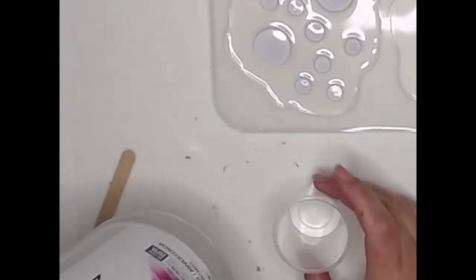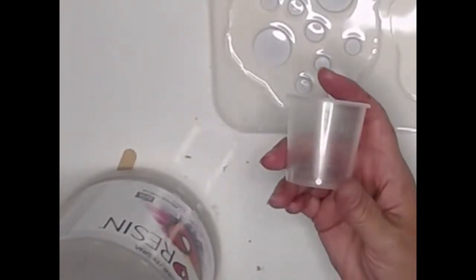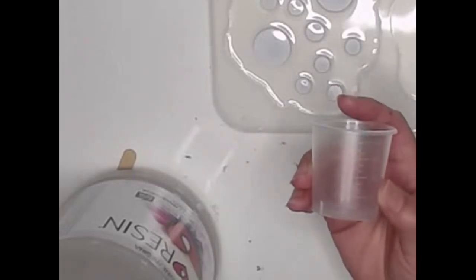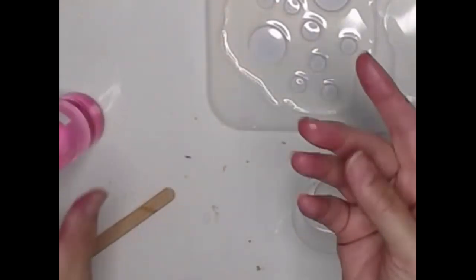All right, now Alumilite and Art Resin both have a 50-50 mixing ratio. You always want to be careful when using resin, because they're not all 50-50, but these two brands are. And I'm just going to go in and very carefully measure out how much I need. And I'm doing a thicker layer here, so I'm going to do a full ounce, which means a half ounce of each of my Part A and Part B.